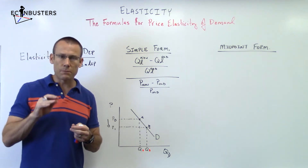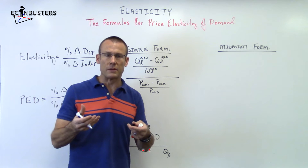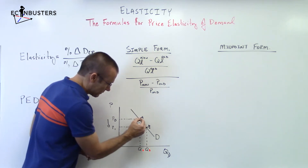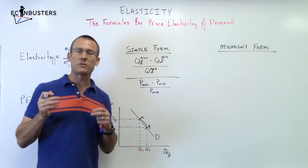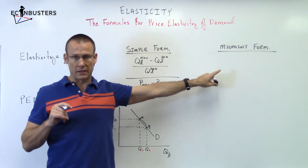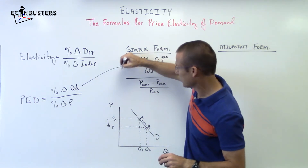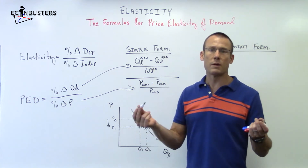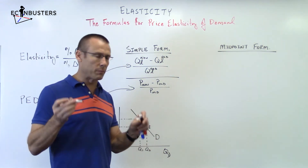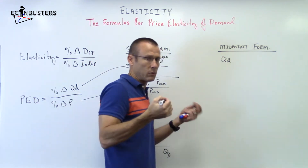Some professors and AP tests want you to know the midpoint formula — a superior measurement that gives you one single value for a range on the demand curve, no matter what you pick as old and new, because we're not picking old or new — we're using the midpoint. This formula looks big but it's really simple. You still want percent change in QD over percent change in price. If you know new minus old over old, you can do this — the midpoint formula is just a little bit more involved.